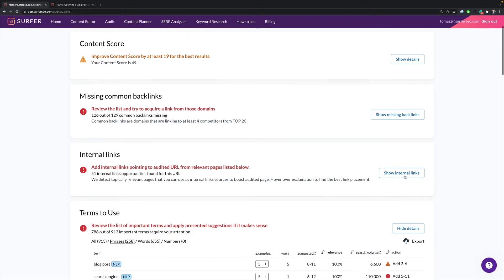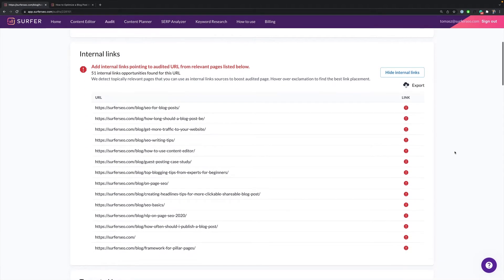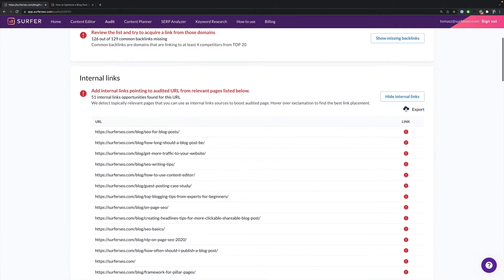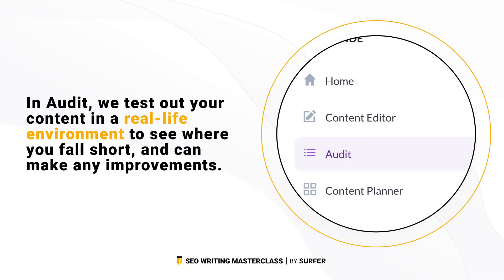Remove keywords from the terms to use section and fix any other errors you may find. If you notice that some terms are different from what you've seen in the content editor, don't worry. In audit, we test out your content in a real-life environment to see where you fall short and can make any improvements.